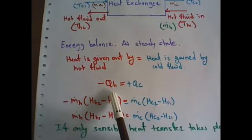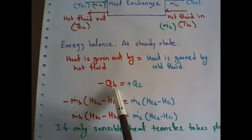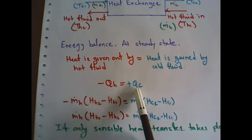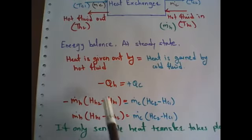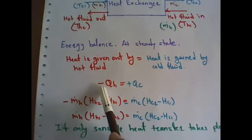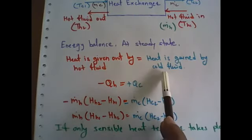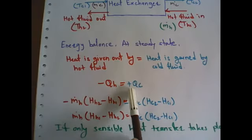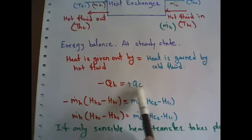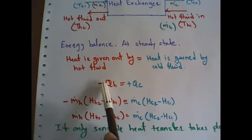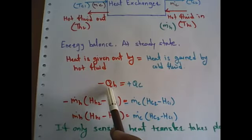The heat given out by the hot fluid is represented as Qh (rate of heat transfer of the hot fluid), and Qc is the rate of heat transfer of the cold fluid. The minus sign is used because the hot fluid loses its heat, while the plus sign indicates that the cold fluid gains heat. So the minus sign on Qh is important to denote heat given out.